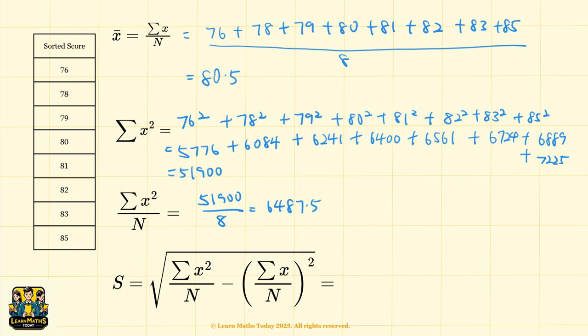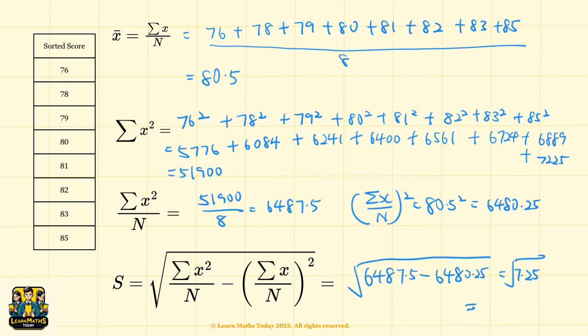For the last part, we just have to find the square of the mean. And then we use what we already computed: 6487.5 minus this value, 6480.25, which is the square of the mean. We get 7.25 for this. And remember to square root it to get 2.69.